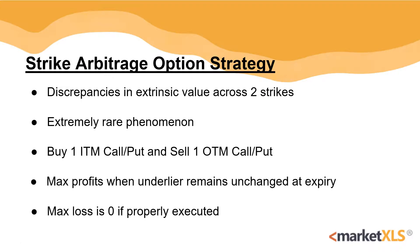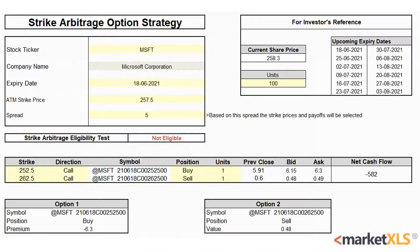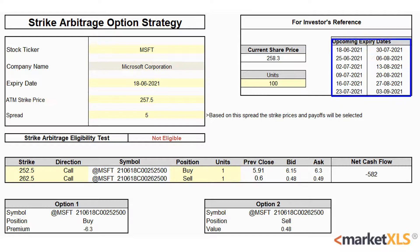MarketXLS offers a template for this strategy. Here's an introduction page and here's the active template to understand how to use this strategy using MarketXLS. The yellow cells have to be inputted by the user: the stock ticker, expiry date, the at-the-money strike price, and the spread. Some upcoming expiry dates are available for reference on the side.